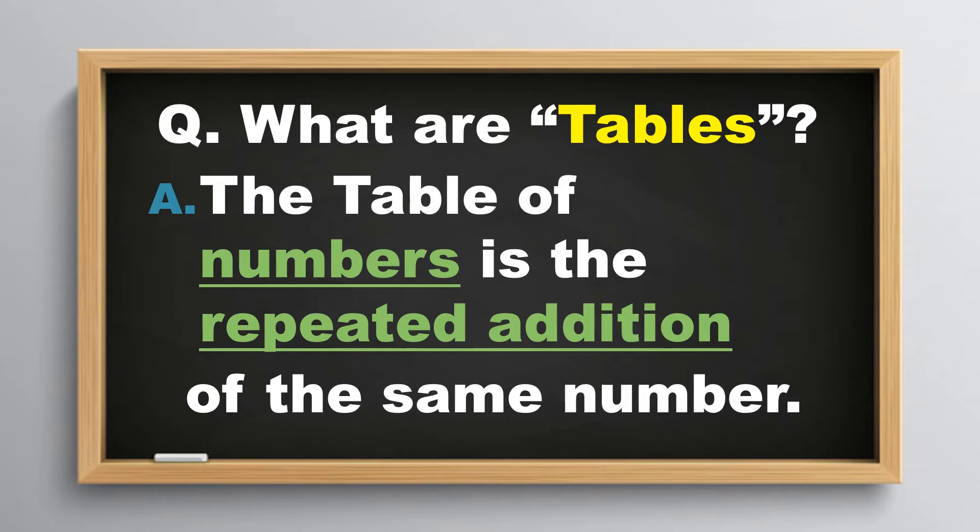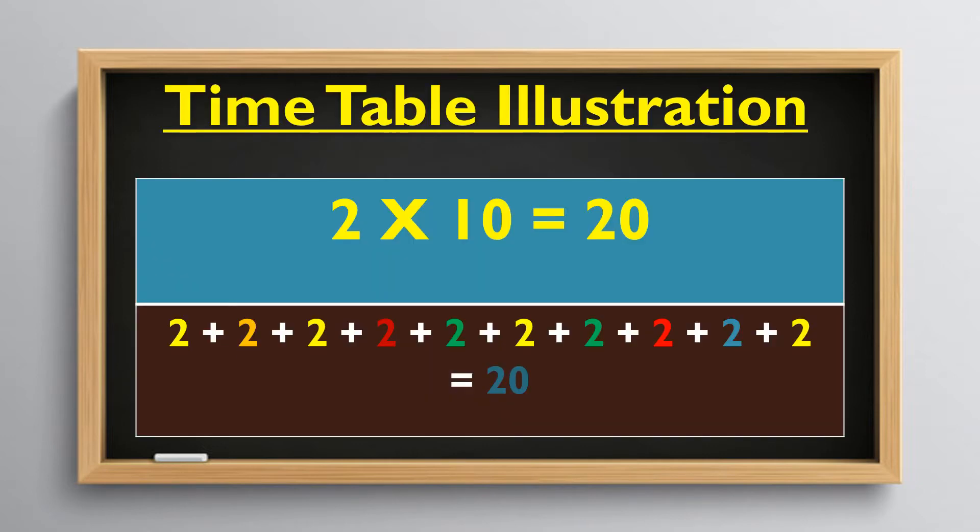The table of numbers is the repeated addition of the same number. Time table illustration: 2 times 10 equals 20. When we add the number 2 ten times, we get the answer 20. So, 2 times 10 is 20.